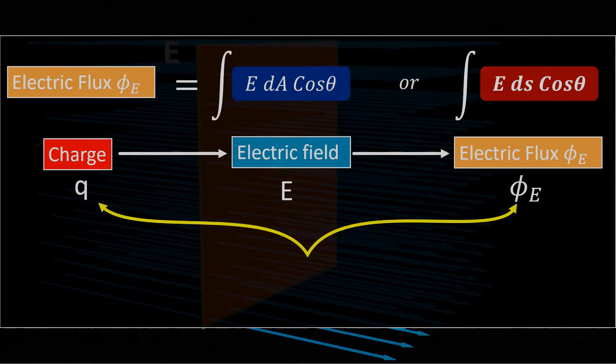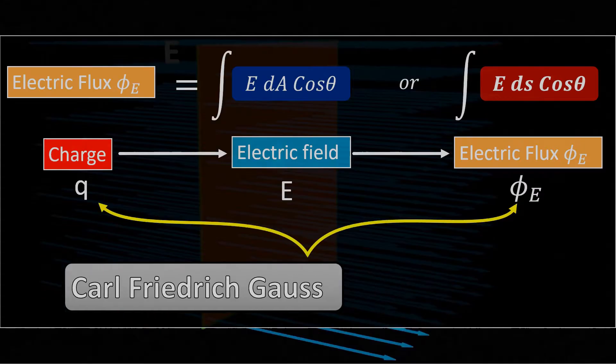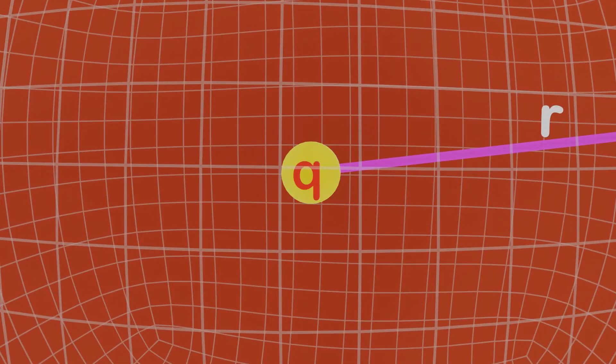To explain the relationship between charge and electric flux, in 1835, the German mathematician and physicist Carl Friedrich Gauss provided a relation. According to this relation, if we consider an imaginary sphere of radius R, inside which there is a positive charge enclosed,